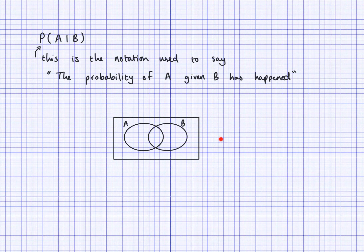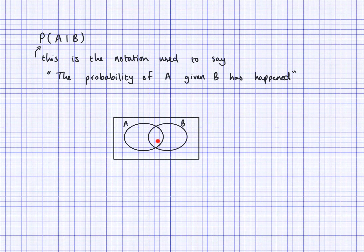Let's use this Venn diagram to help us understand what that might mean. Probability of A given B has happened — so B needs to happen, that's this circle here. The intersection is the part where we have both A and B. The part where A happens but B doesn't is not included. So we're thinking about the intersection at the top, and the entire B at the bottom of the fraction. So probability of B needs to be at the bottom.